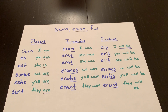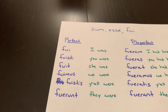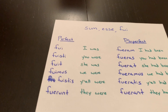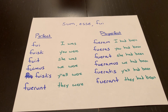So those are the first three tenses of SUM — irregular and need to be memorized. Now let's look at the perfect system. The perfect system, if you remember from earlier in the year, is nice because it is never irregular. Even with irregular verbs, it still follows the rules.